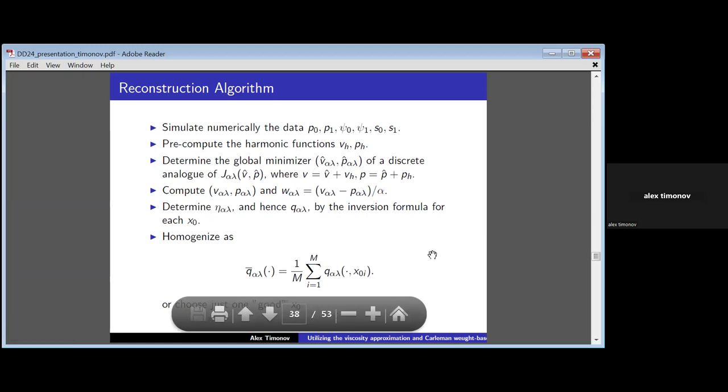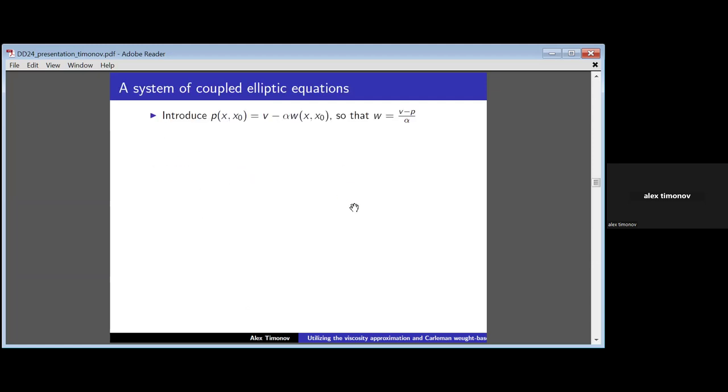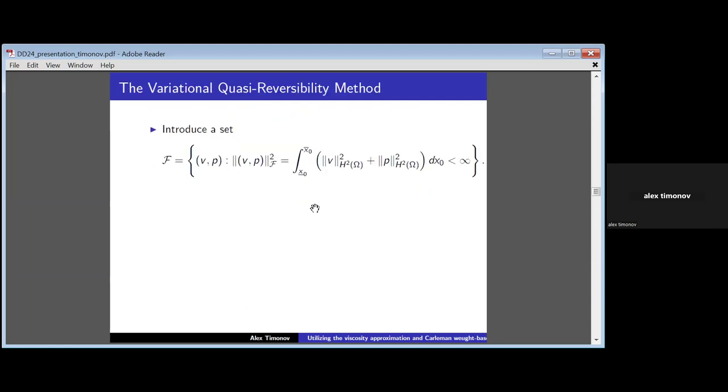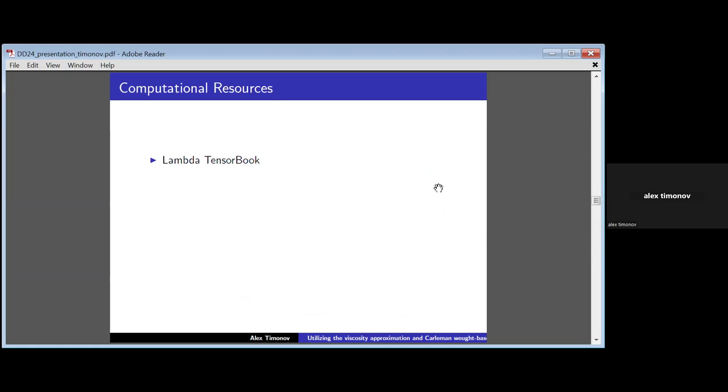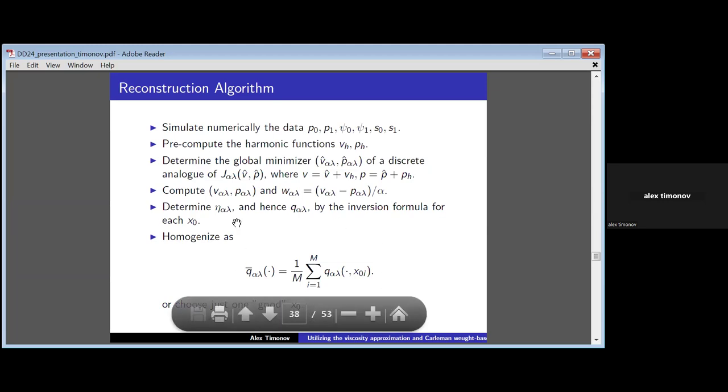A couple of words about aspect of sources. For this, we don't need the whole set of X0, the position of the source. Either we would use only one, and we have to choose an appropriate one, and find the corresponding image. Or, if you wish, we have to average all sets of images obtained for every X0, for every position of the source.